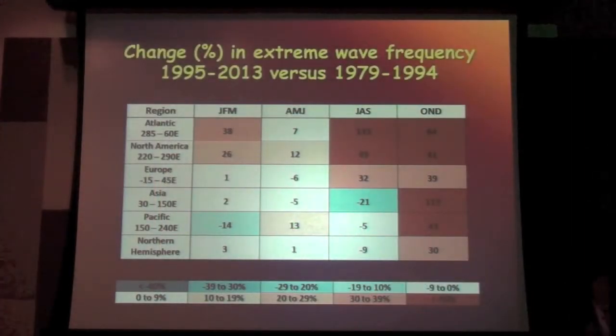But we can look at them all around the northern hemisphere, and that's what I'm showing you here. So these are all the different regions. We've got the Atlantic, over North America, over Europe, over Asia, and the Pacific, and the whole northern hemisphere for all four seasons. And these numbers here are showing you the percentage change in how often these wavy patterns have happened between these two periods of time. So this is the recent 18 years or so compared to the early part of the record.